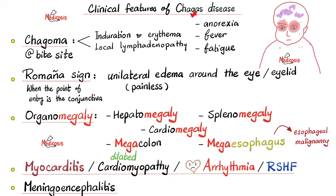The clinical features of Chagas disease. First, chagoma: at the site of the bite, there is induration, erythema, and local lymphadenopathy. Second, Romaña's sign: unilateral, painless edema around the eye or eyelid. This occurs if the point of entry of trypanosomes is through the conjunctiva. Note: it should be unilateral, not bilateral as sometimes depicted.